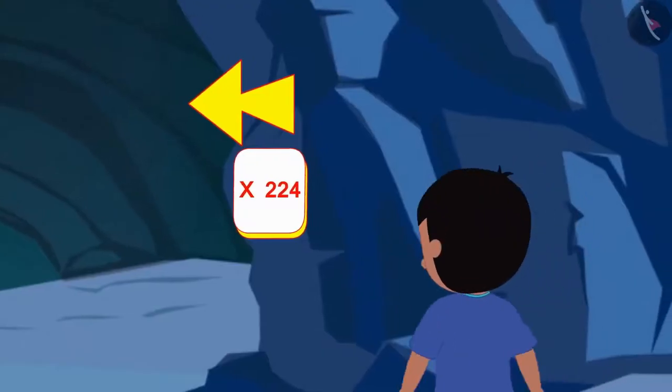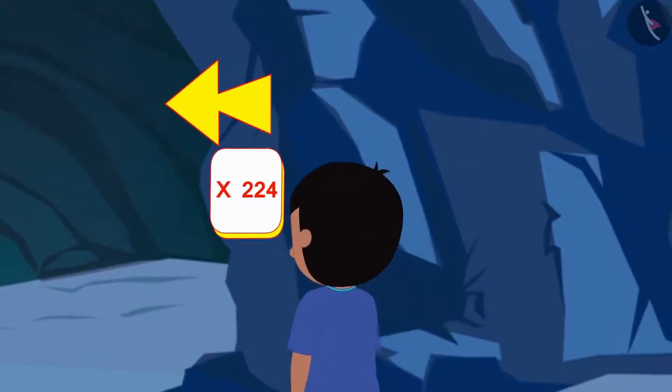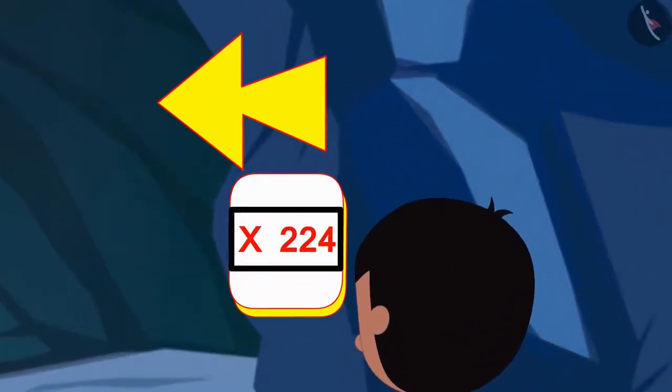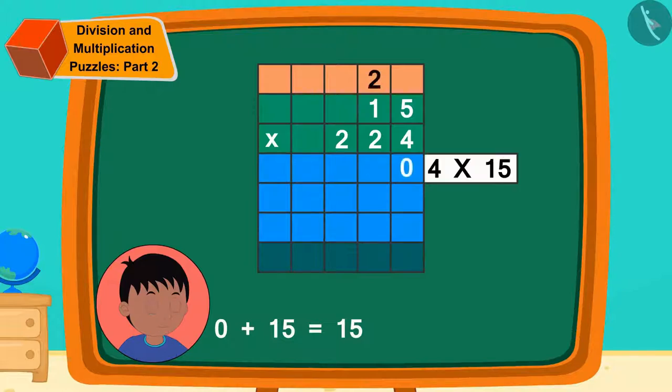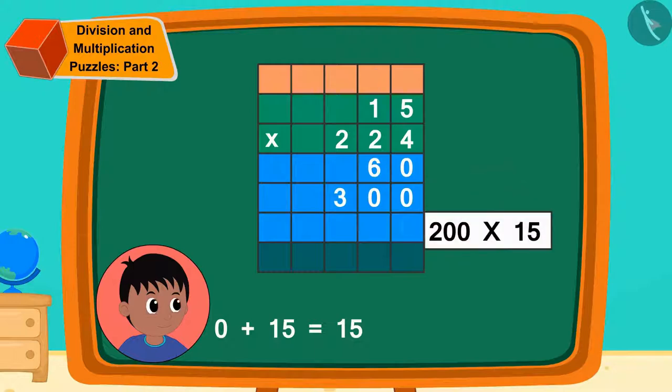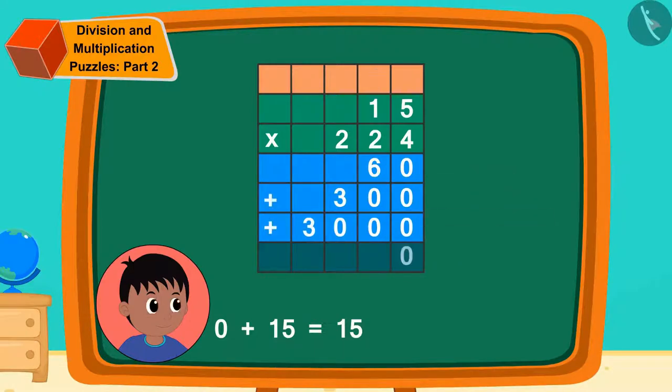Raju started walking further. Oh, now here 224 is written along with the multiplication symbol. That means I have to multiply 15 by 224. Raju quickly multiplied 224 with 15 in this way and wrote down the answer.